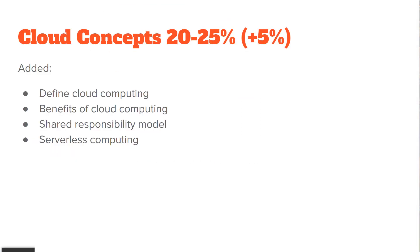The AZ-900 exam used to have four significant categories, and now that's expanded to six. The first category is cloud concepts, and it's now 20 to 25% of the exam score — a 5% increase. Some new topics have been added: define cloud computing, benefits of cloud computing. This course already contained the definition of cloud computing before, and the benefits have now been added to the requirements formally. The shared responsibility model has also been added, along with the concept of serverless computing.